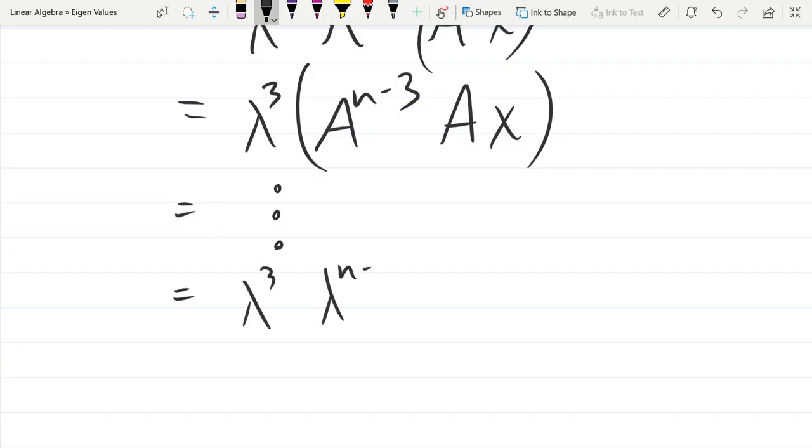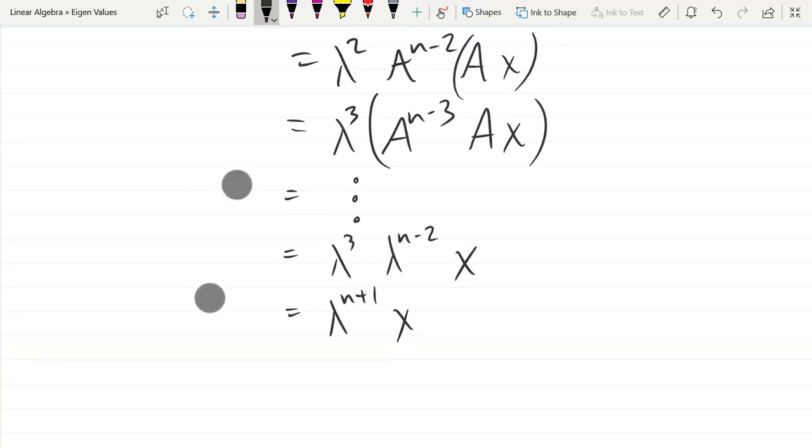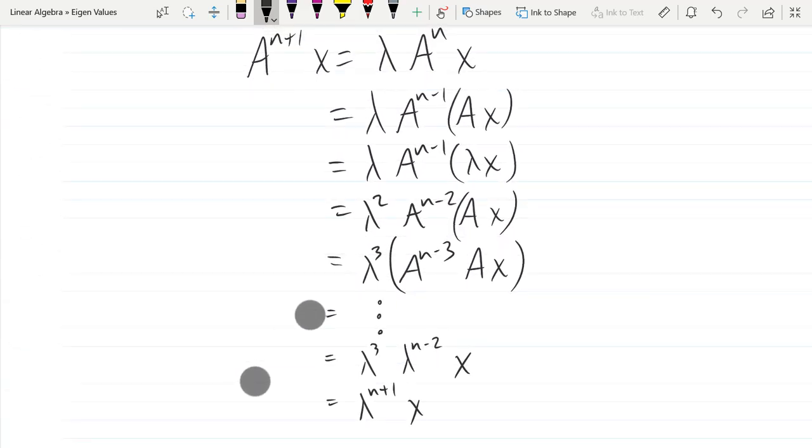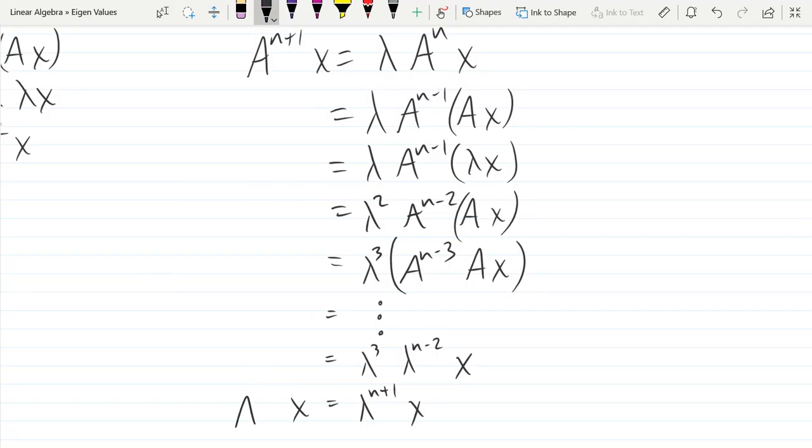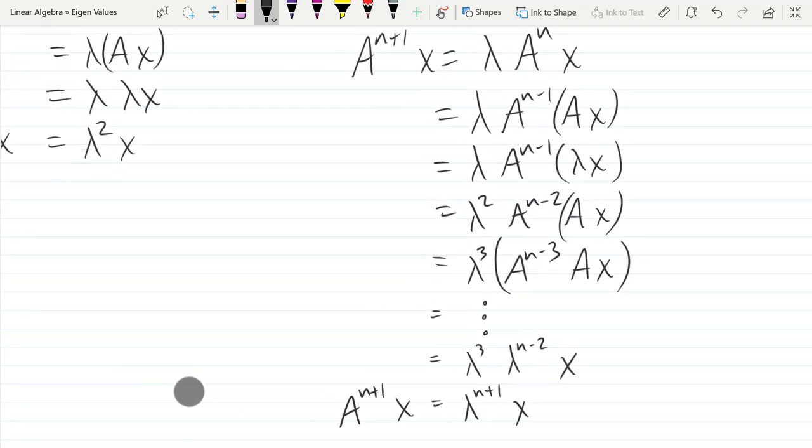So we'll go dot dot dot, lambda cubed, lambda^(n-2). No more As, get those out. Check out all the As. So total, lambda to the n+1. Hopefully it looks like my addition's right. Yup. And on the right side, somewhere way up there, we had n+1. So it works for A to the n power, lambda to the n power.